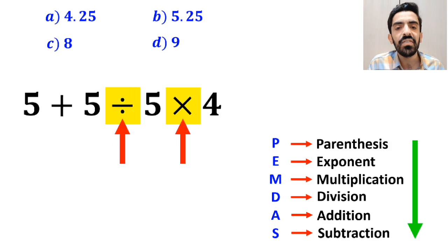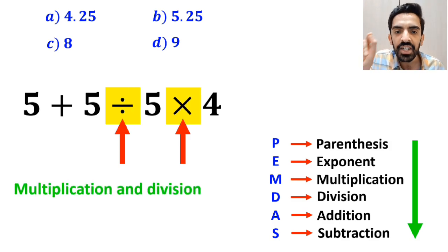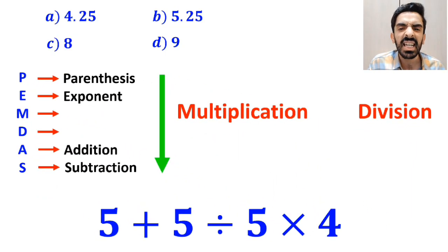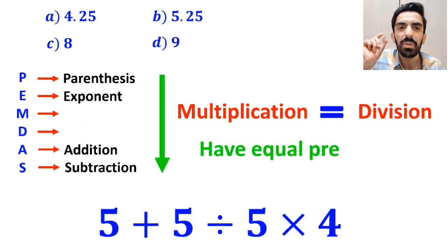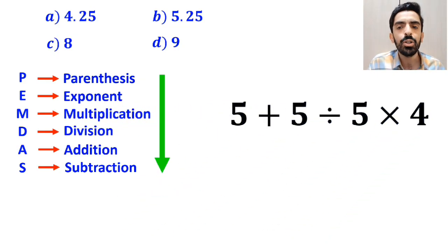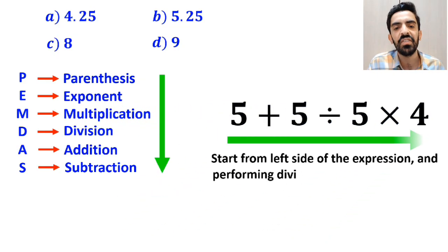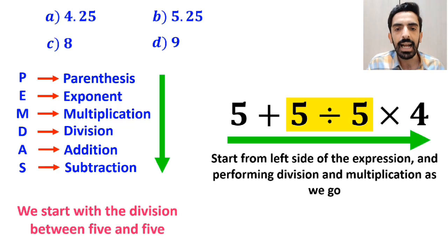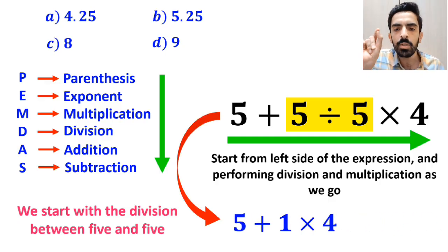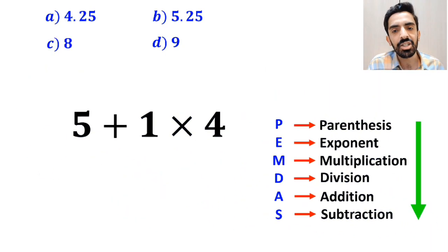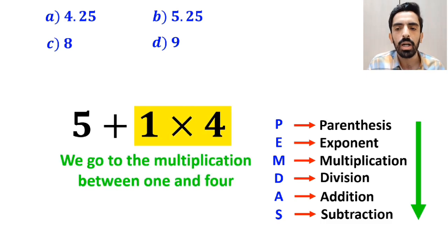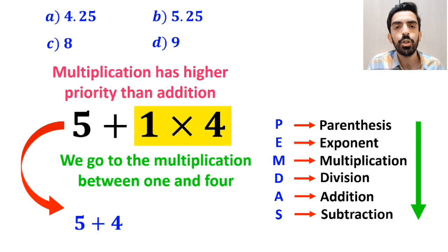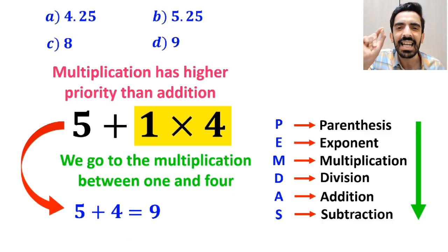Now it's time to perform the division and multiplication, because multiplication and division have higher priority than addition. However, we must pay close attention that multiplication and division have equal precedence. In this case, the best thing to do is to start from the left side of the expression, performing division and multiplication as we go. So we start with the division between 5 and 5, and instead of this expression, we can write 5 plus 1 multiplied by 4. In the next step, we go to the multiplication between 1 and 4, because multiplication has higher priority than addition. So this expression simplifies to 5 plus 4, which ultimately gives us the answer 9.